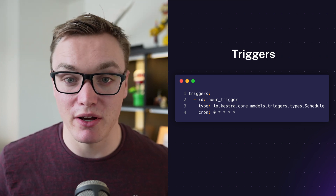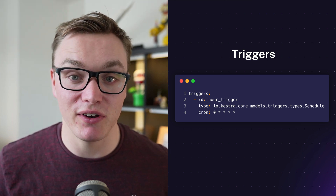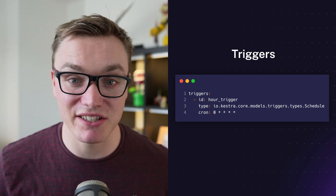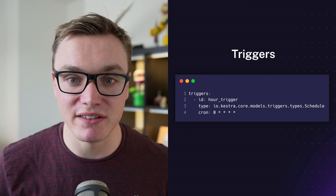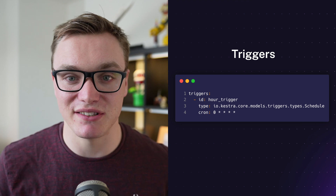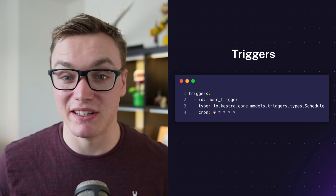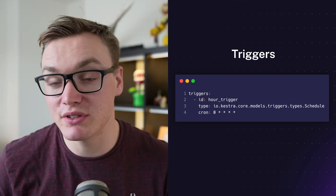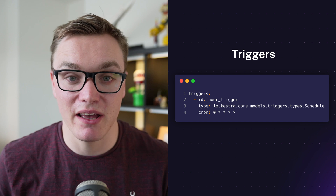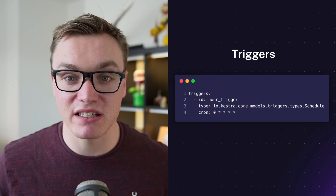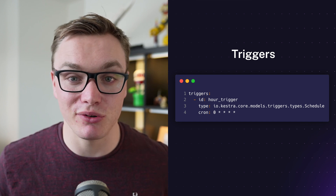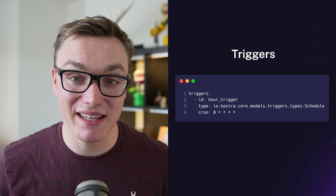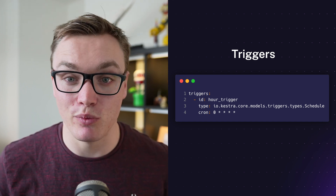The last concept we'll cover today is triggers. Rather than manually pressing execute, it's really useful to have your flows execute when certain conditions happen. This could be a schedule, a webhook, or something else. These are super flexible and let you make sure your flows get executed when you want them to.